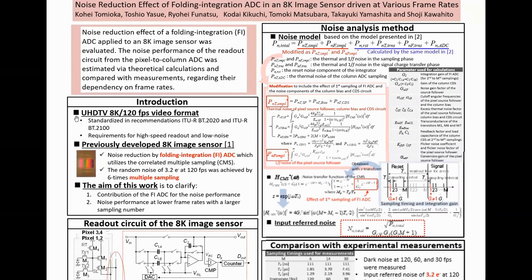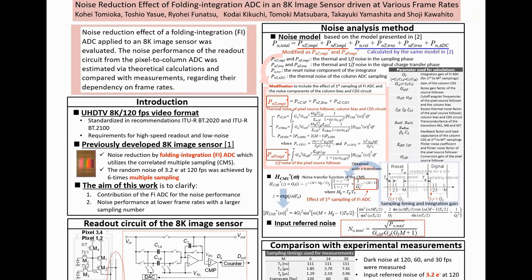The UHD-TV 8K 120 FPS video format was standardized in recommendations of ITOR, and high-speed readouts and low noise performance are required for the image sensors.